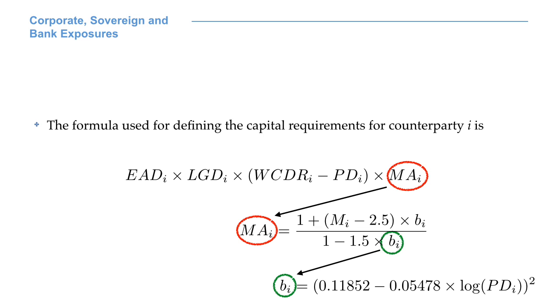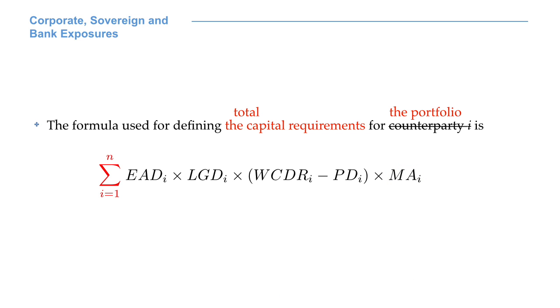For corporate, sovereign, and bank exposures, the formula used for computing the capital requirements for each counterparty is the one you see on your screen. This is a risk weight function. The element MA is called maturity adjustment, and it is defined as follows. Once again, the formula is given by the regulator. The maturity adjustment is meant to allow for the fact that if an obligation lasts longer than one year, there is a one-year credit exposure arising from a possible decline in the credit worthiness of the counterparty, as well as from a possible default of the counterparty. Just consider that for M, maturity equal to 1, the maturity adjustment is 1 as well.